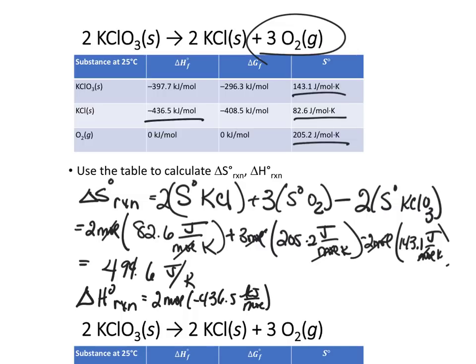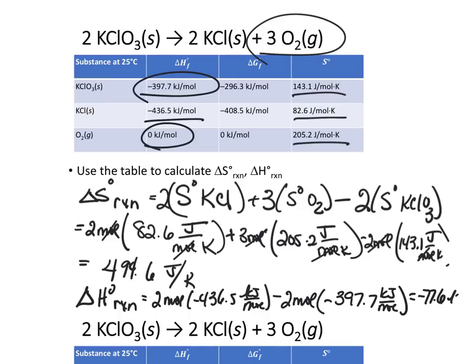That's the one product. We have 3 times 0, because oxygen is 0, so I'm not going to even write that down. That's the products minus 2 moles times the delta H of KClO3, which is right there. So it's a negative 397.7 kilojoules per mole, and that will give me a delta H value equal to a negative 77.6 kilojoules.